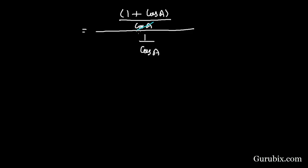We can cancel out cos A with cos A, then we end up with 1 + cos A. Now we shall start with the right hand side of the identity.